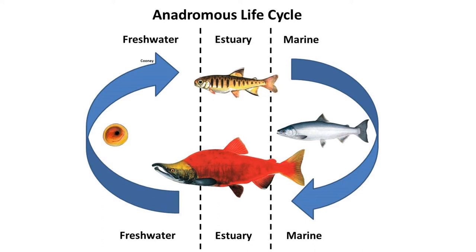There are two major life cycles. Anadromous species do the majority of their growing in marine systems but do their early life and grow a little in fresh water before heading downstream. This is characterized by salmon, but sturgeon, herring, striped bass, lampreys, and brook trout can all do this. There's a lot of variability in these systems.